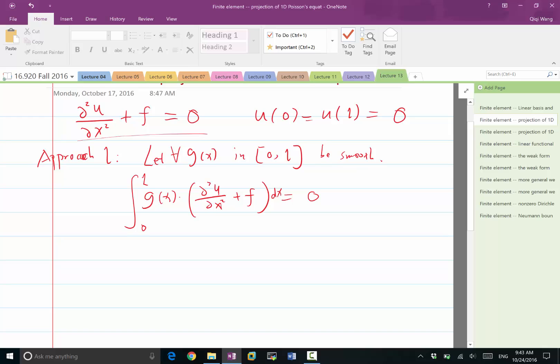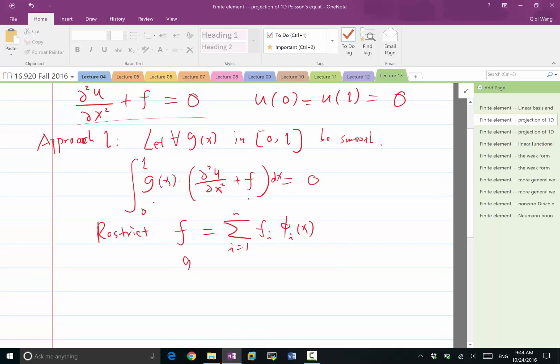Now what I'm going to do is I'm going to restrict f and g within the same linear space. So I'm going to restrict f is going to be forced to be a linear combination of a certain basis functions, phi i of x. And g of x, I'm going to force it to be the actual basis functions, j goes from 1 to n.